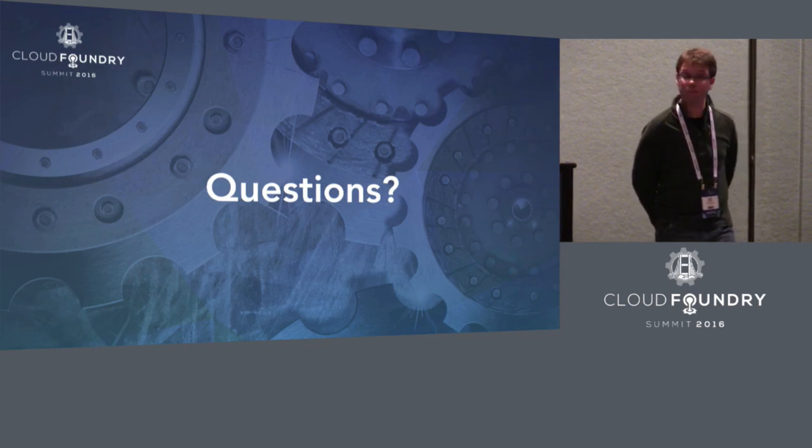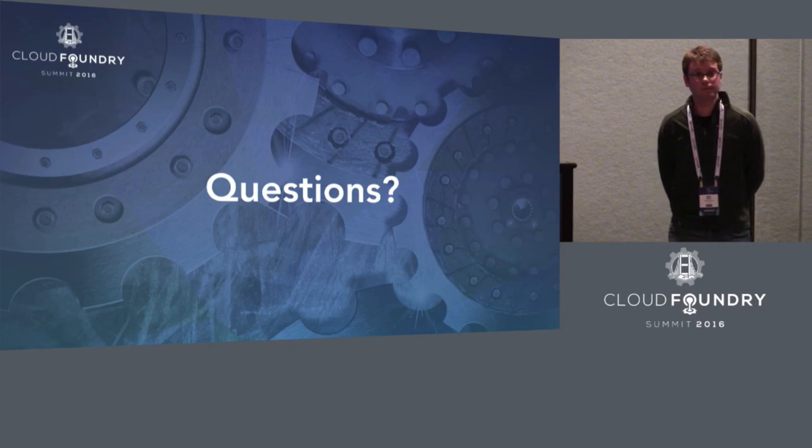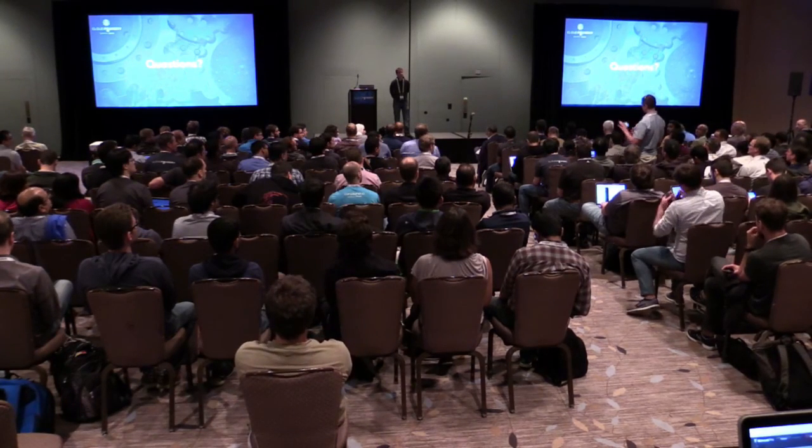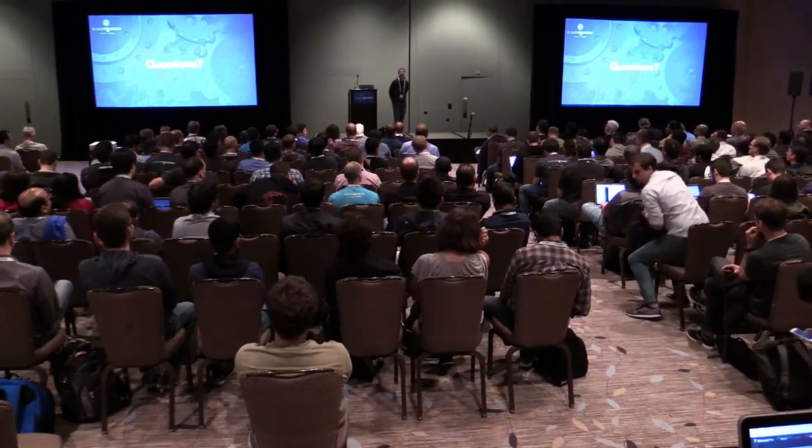We've got a couple minutes left for questions. One question: are we planning to fold Diego into CF release as DEAs phase out? We've intentionally kept Diego release separate from CF release. The broader plan is to break CF release into subsystems — Cloud Controller, UAA, routing releases — and the release integration team is working on a unified manifest generation system that will incorporate both existing CF release components and Diego ones. For now it's a separate deployment manifest.